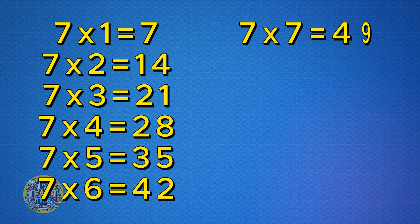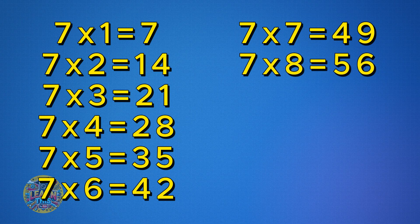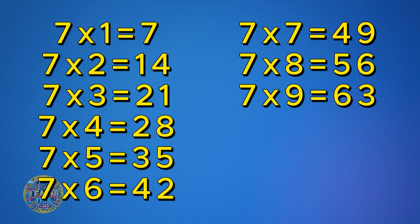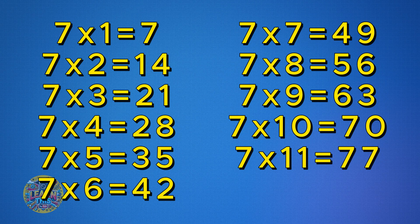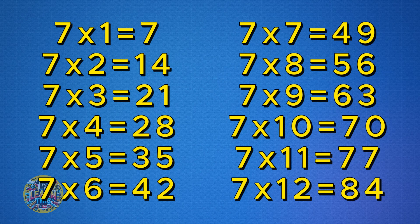Seven times seven is 49. Seven times eight is 56. Seven times nine is 63. Seven times ten is 70. Seven times eleven is 77. Seven times twelve is 84.